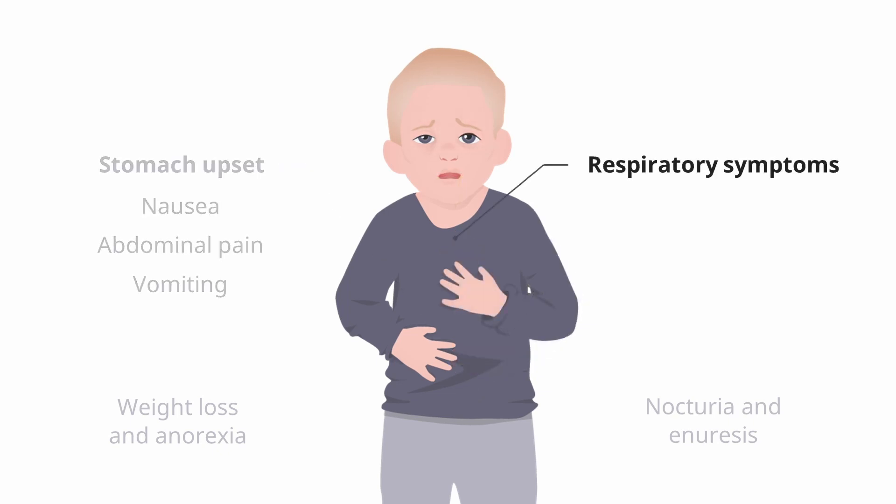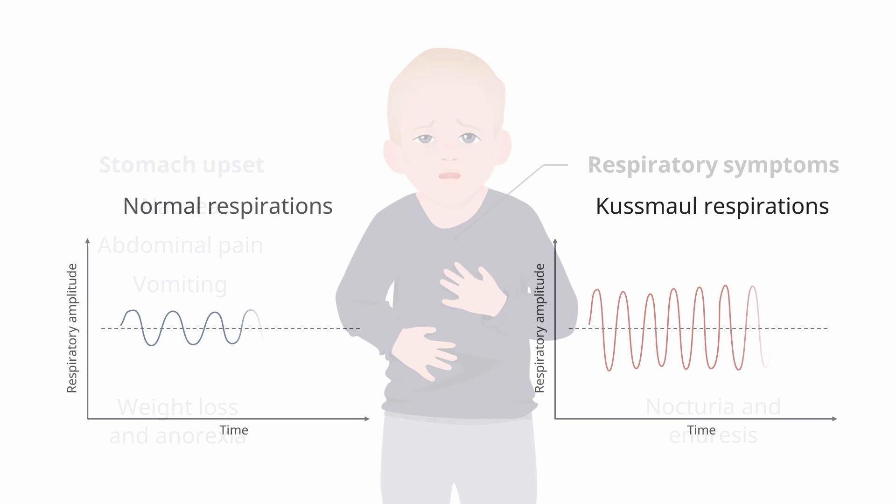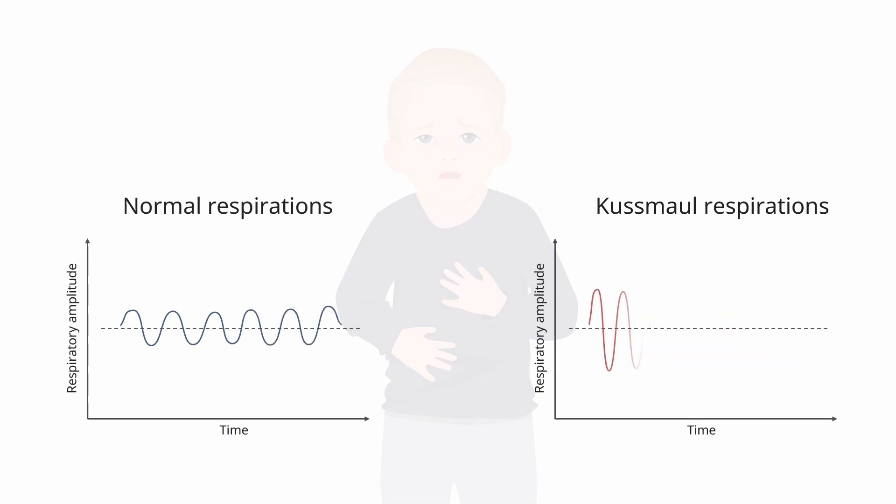There are some respiratory manifestations of DKA. So you're going to notice what we call Kussmaul's respirations. And what does that look like? So Kussmaul's respirations are fast, deep breathing. The patient is actually hyperventilating a little bit. And this is because they have this acidosis. Their body is trying to compensate for that. So patients are going to be breathing very deeply and very quickly.